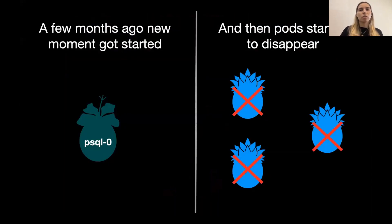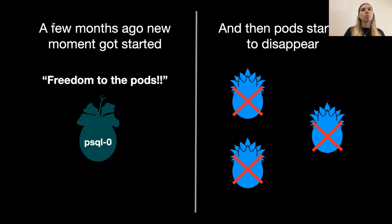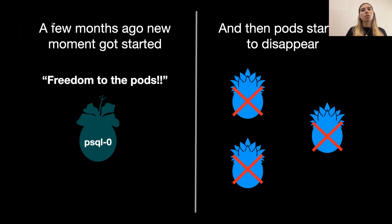On the way to the functional cave as they called it, the pods told her that various events had happened. First, a few months ago some new political movement started, where some pods decided to separate with the slogan 'freedom to the pods.' Not many pods actually supported that movement and they didn't really understand the essence of it. At some point, the pods who supported the movement just started to disappear. No one knew where they were going or what was happening, and everyone continued with their lives, but the pods felt some kind of anomaly in the world.